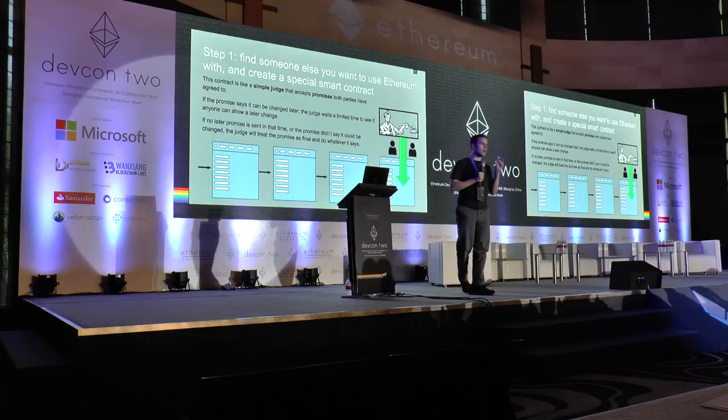The idea of this contract is that it's a very simple judge. It doesn't understand a lot, but it mostly understands that if you made a promise, you need to keep that promise unless you changed it later. If you send a promise in to the judge and it says it can be changed later, it waits around for a bit and says, 'Was there a later promise? I didn't hear a later promise — this must be the final promise.' And then it basically does whatever the promise says. That's the basic principle.